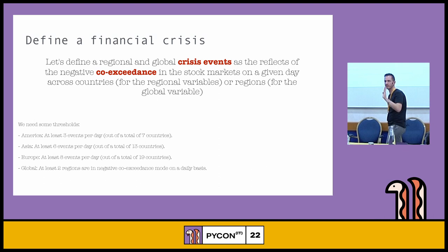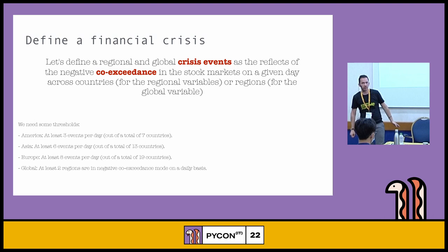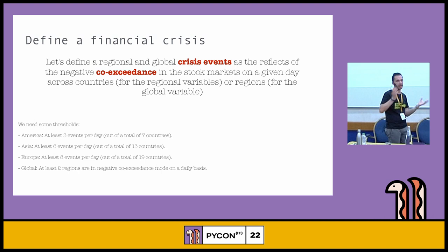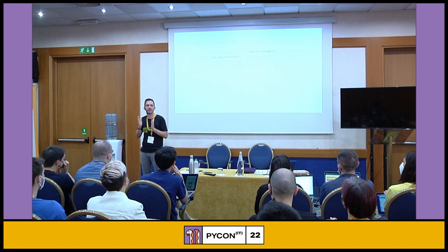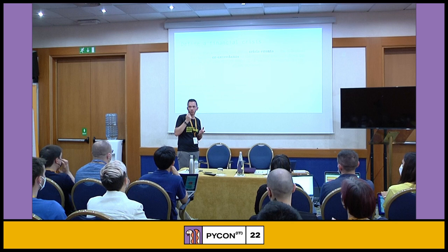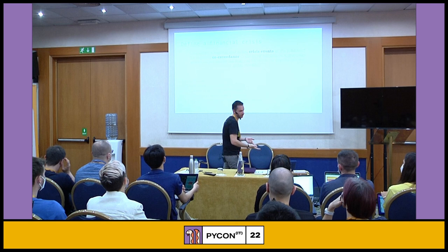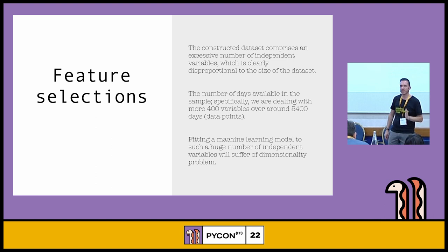To calculate the target we use a formula based on regions: for America we have seven countries, for Asia 13 countries, for Europe about 19 countries. We use the main countries. If for a given day at least 50% of countries in a region have a crisis event, we mark the European, Asian, or American crisis target as true. Now we have the target and we can select the features. We have a lot of dimensions, but only a few are relevant to our exercise.